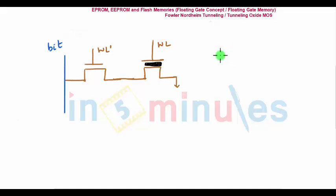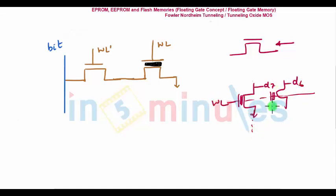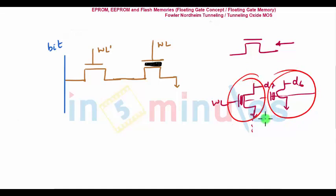In ROM arrays and EEPROM, we use only one transistor per cell. In floating gate memory, we also had only one transistor. Suppose this was my word line, this was d7, this was d6 — this was connected to ground. So basically, in NOR-based ROM arrays or EEPROM, we had only one transistor in each cell.